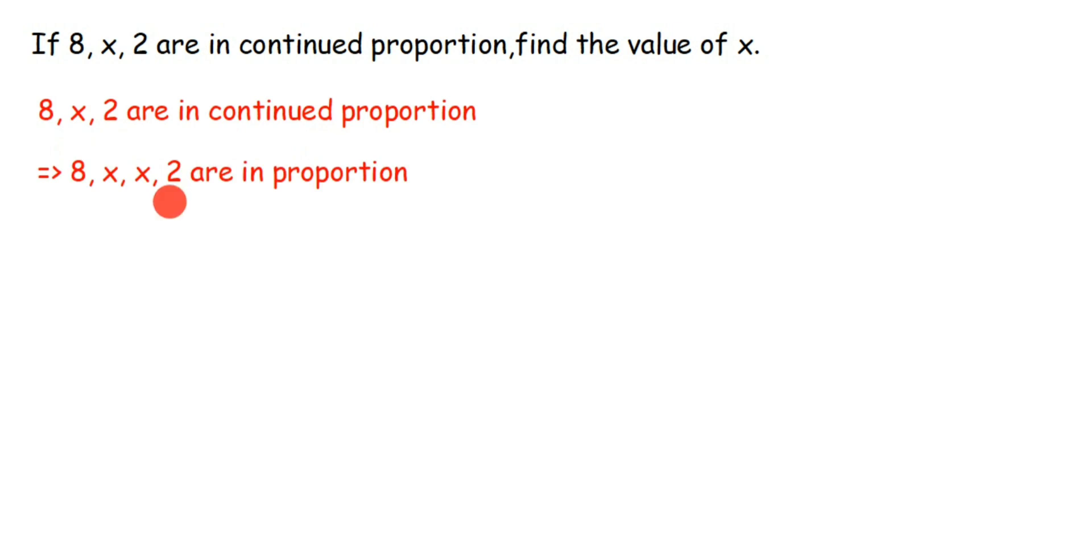When we say that they are in proportion, this means that the ratio of first two terms is equal to the ratio of last two terms. That is, 8 is to x as x is to 2. We know that when four terms are in proportion, then product of extremes is equal to product of means.